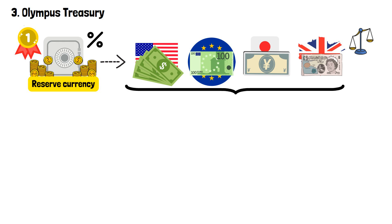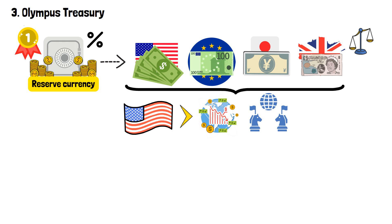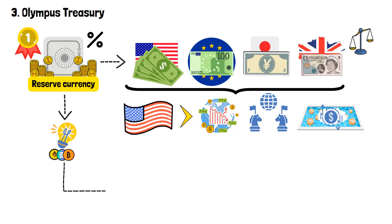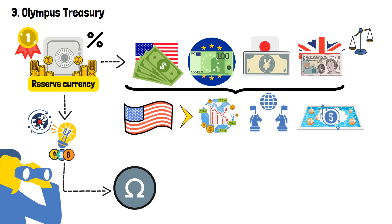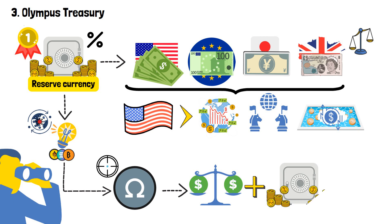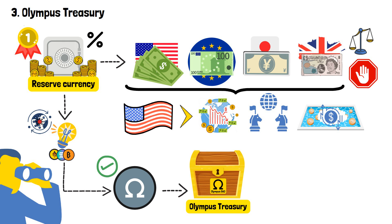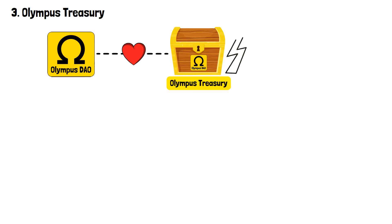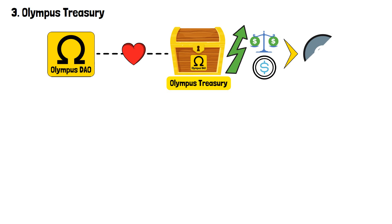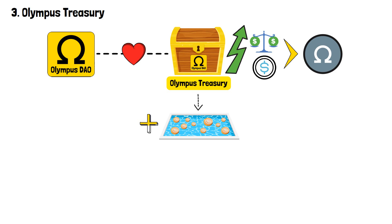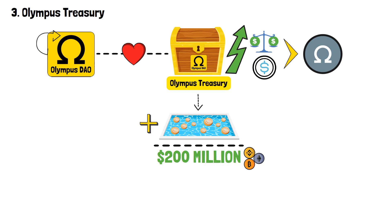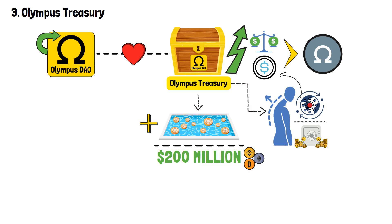The designation of a reserve currency is influenced by factors such as a country's economic strength, political stability and the depth and liquidity of its financial markets. In the context of cryptocurrencies, the emergence of reserve currencies like OM within decentralized systems offers a new perspective. And OM is trying to do that with the help of the Olympus treasury — a pool of assets composed of more than $200 million worth of crypto assets held within the protocol, forming the backbone of the ecosystem.